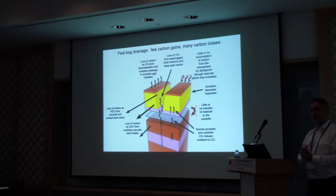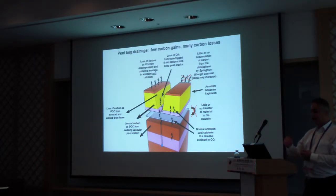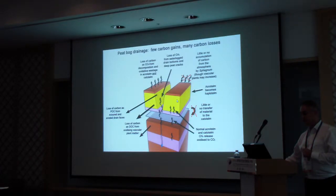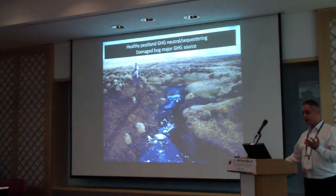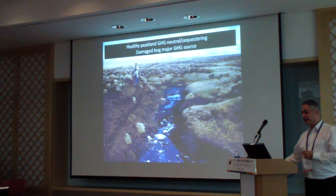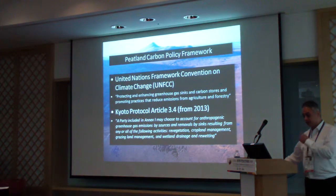So it's far worse in global warming terms to have a damaged bog than to have a healthy bog. That's the challenge for us — let's keep the peatlands healthy and not let them become damaged. And if they have become damaged, let's re-wet them and repair them, because that's the best gain for climate change. So much carbon is coming out of these damaged peatlands that it completely outweighs any of the methane impacts of a healthy peatland. Keeping peatlands wet and healthy is the goal for climate change.